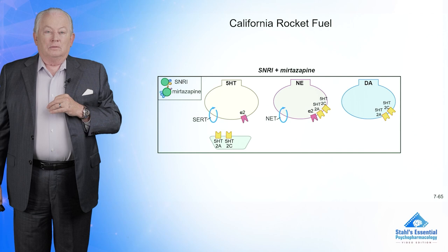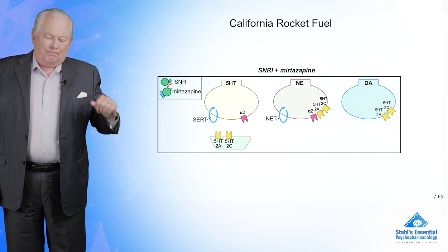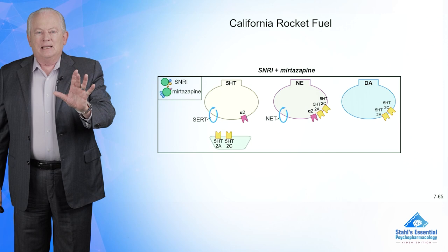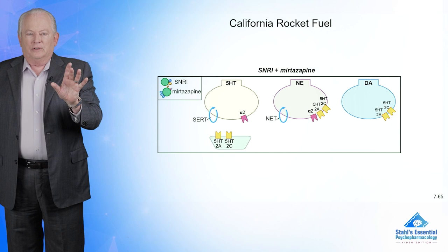I coined something many years ago called California Rocket Fuel — the idea being that it blasts you out of the deep hole of depression. What you do is add an SNRI to mirtazapine. On the left you've got a serotonin pump and an alpha-2 receptor on the presynaptic side, and serotonin receptors on the postsynaptic side.